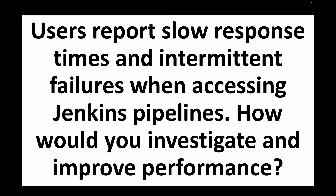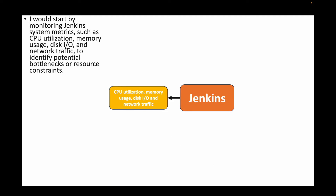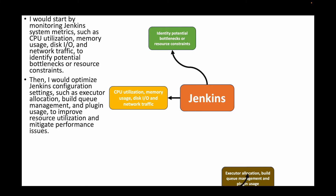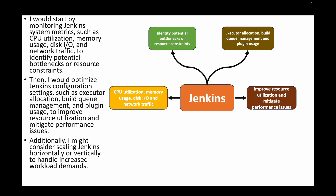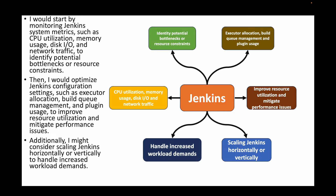The next question: users report slow response times and intermittent failures when accessing Jenkins pipelines — how would you investigate and improve performance? Start by monitoring Jenkins system metrics like CPU utilization, memory utilization, disk I/O, and network traffic to identify bottlenecks or resource constraints. Optimize Jenkins configuration settings such as the number of executors, build queue management, and plugin usage to improve resource utilization. Additionally, consider scaling Jenkins horizontally or vertically to handle increased workload demands.